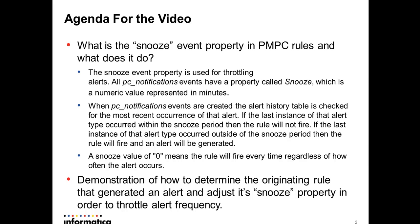Meaning, since we talk about the snooze property being set in minutes, let's say the snooze property equals 60 minutes or one hour. If an alert is now generated, proactive monitoring goes and checks the database to see if another alert for this exact same type has been generated within 60 minutes. If it has, and the snooze property is set to 60, then the rule will not fire.